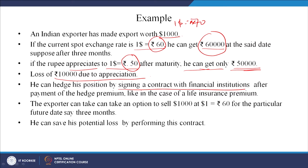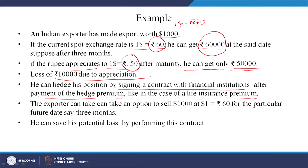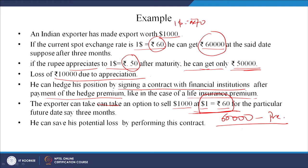He can hedge his position by signing a contract with some financial institution, paying a hedge premium. Like a life insurance contract, the exporter can take an option to sell 1000 dollars at 1 dollar = 60 rupees for a future date, say 3 months, and he pays a premium for it. In any case, at least he will get 60 rupees per dollar - so he is protected against rupee appreciation. The actual amount received is something less than 60,000 after deducting the premium.